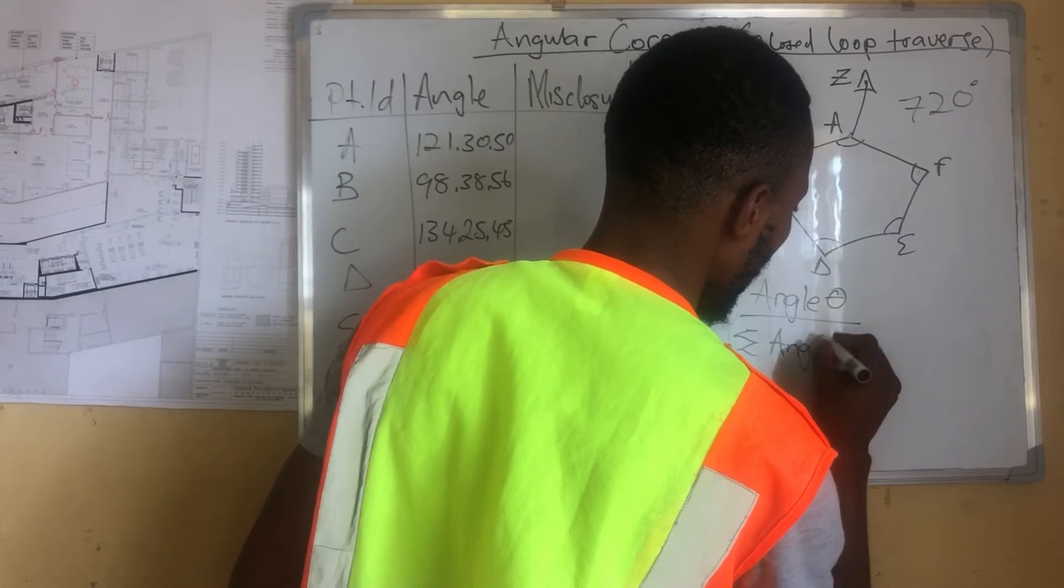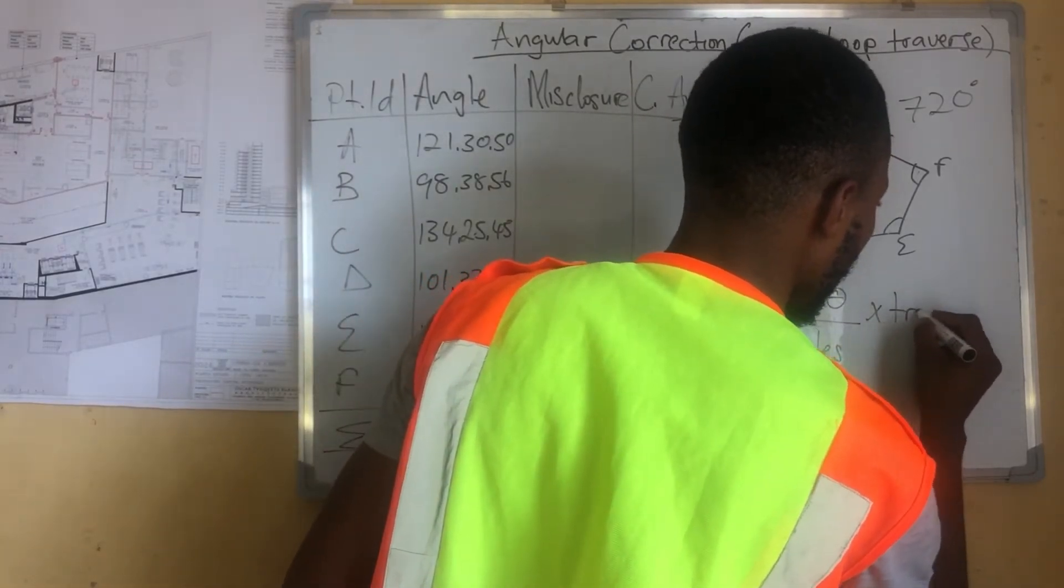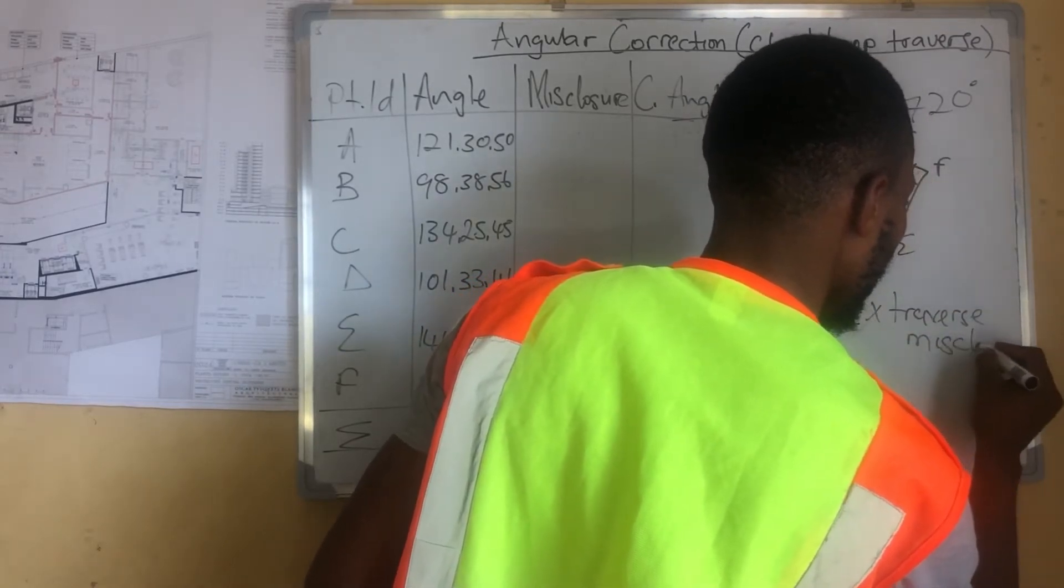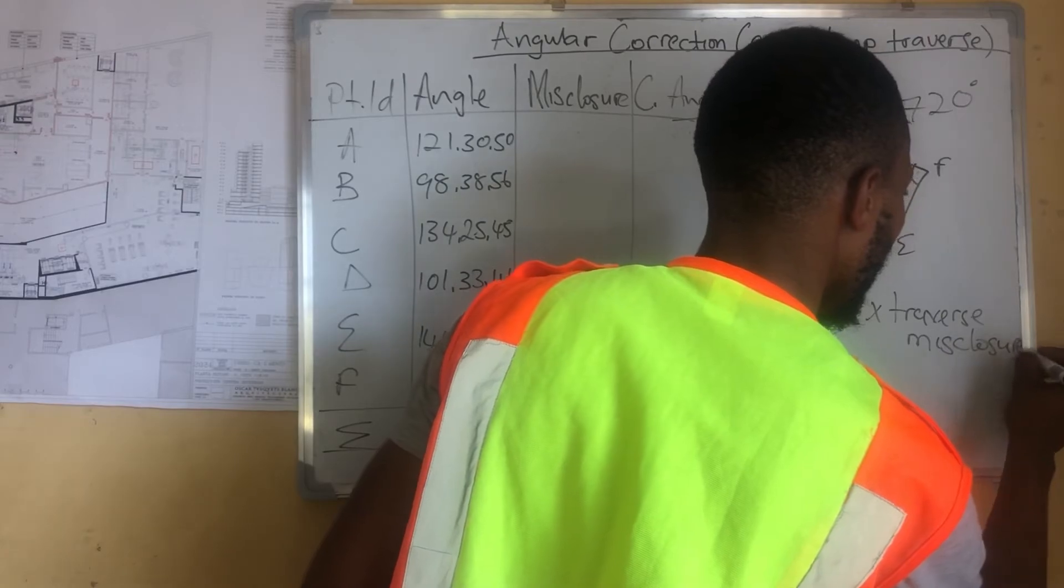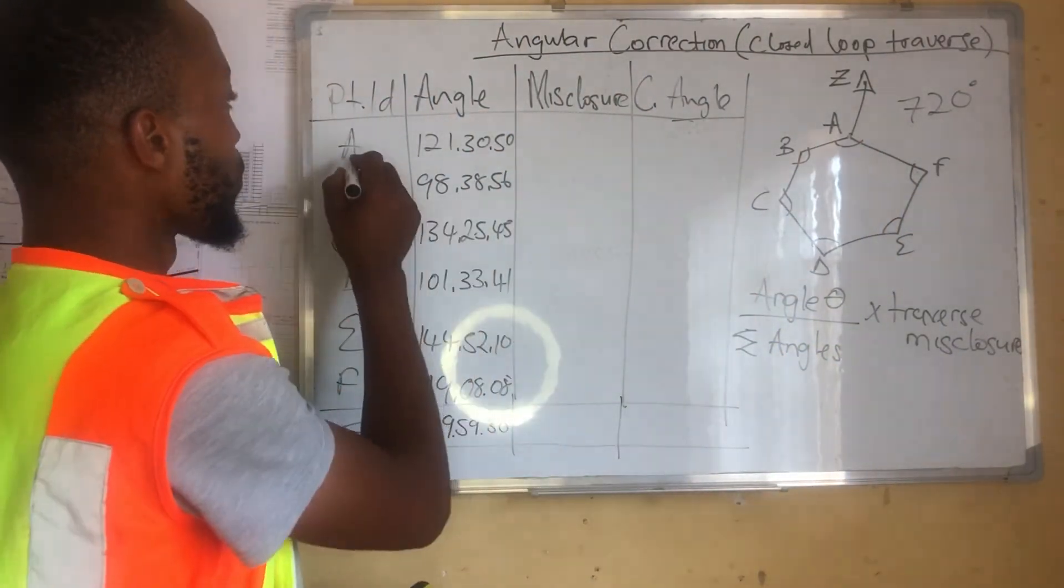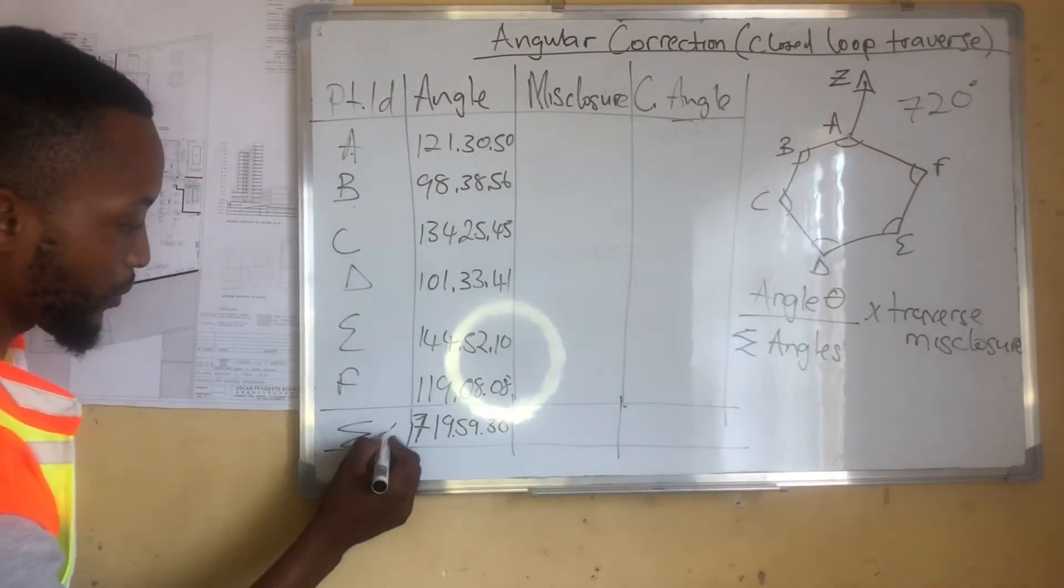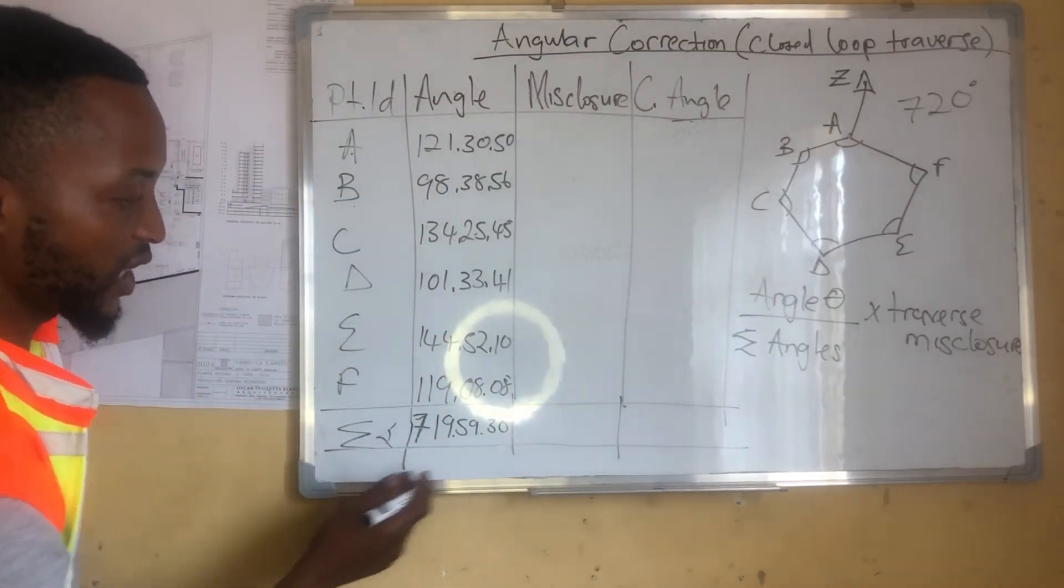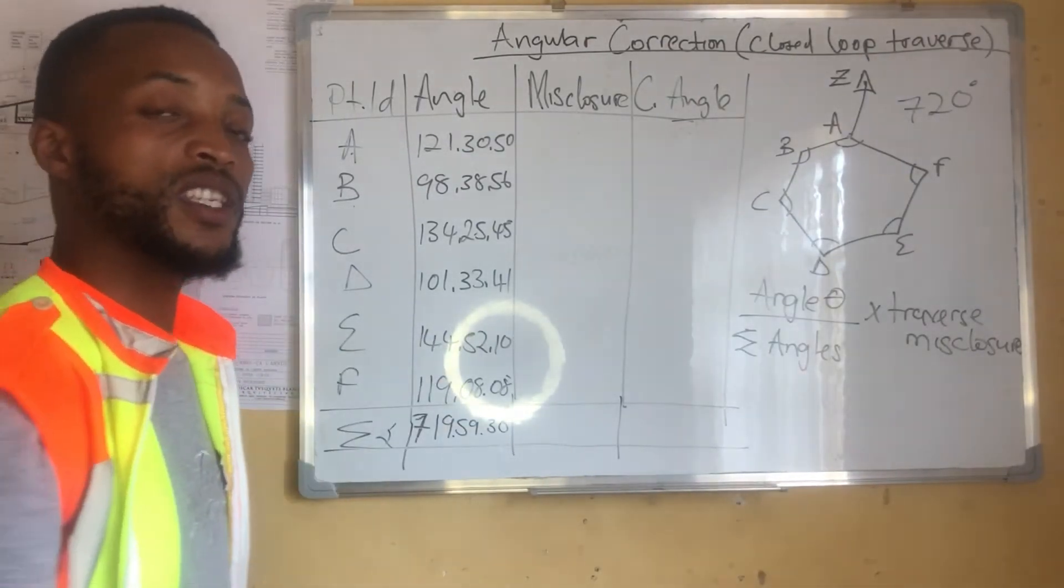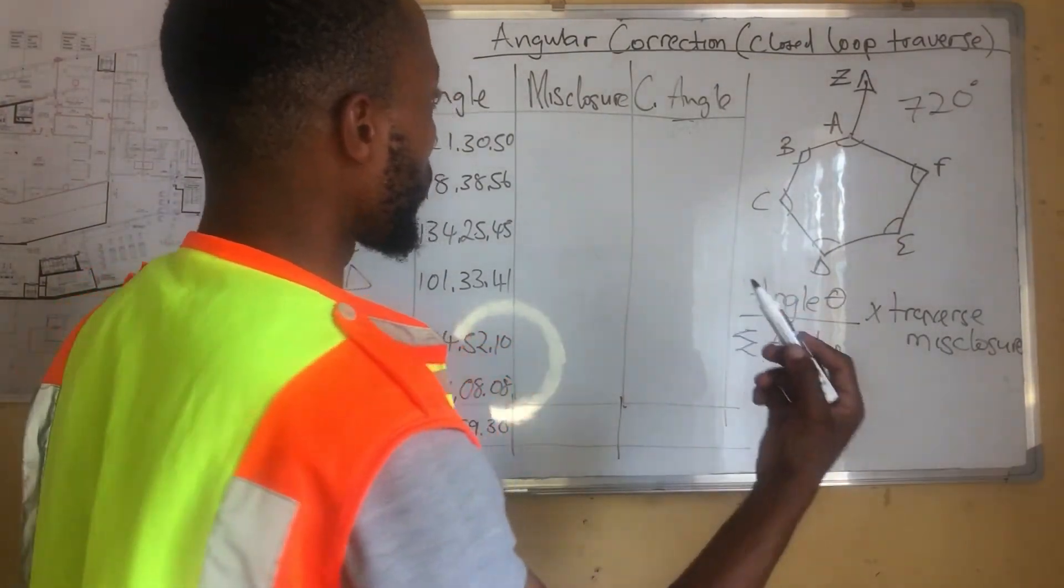Our formula that I'm going to use, it says angle, we say angle theta, angle theta over sum of angles, sum of angles applied by the traverse times misclosure. The angle theta represents these angles, angle A, B, C, D to F. Summation of angles, here is the sum, summation of angles, the 719, 59, 719 degrees, 59 minutes and 30 seconds.